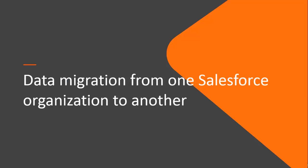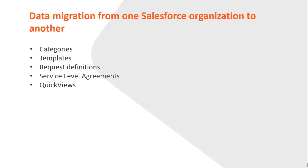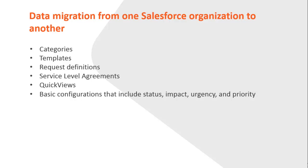System administrators can migrate data from one Salesforce organization to another by using the Pentaho packages provided on BMC Community's website. You can use the Pentaho packages to migrate data from categories, templates, request definitions, solutions, service level agreements, quick views, and basic configurations that include status, impact, urgency, and priority. For example, you can use the Pentaho package to migrate configuration data from a sandbox organization to your production organization.